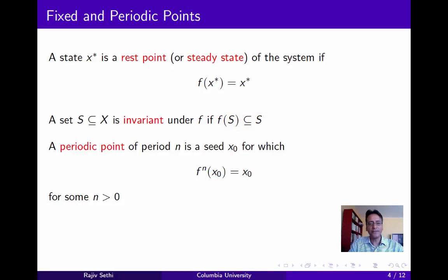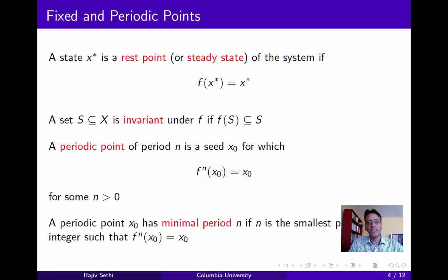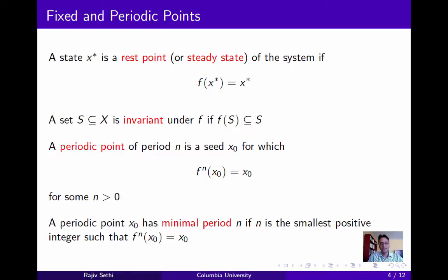We define a periodic point of period n as a seed x_0 for which the image under the n-th iterate of f is equal to x_0. If x_0 is a periodic point of period n, then if you start at x_0, after n periods you'll be back at x_0. A periodic point x_0 has minimal period n if n is the smallest positive integer such that f to the n of x_0 is x_0. Clearly a fixed point has minimal period 1.